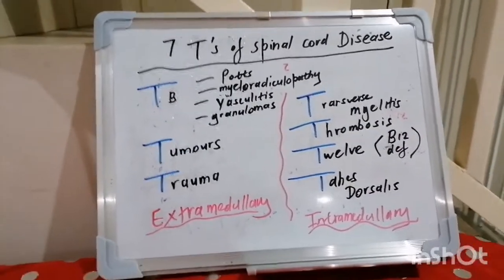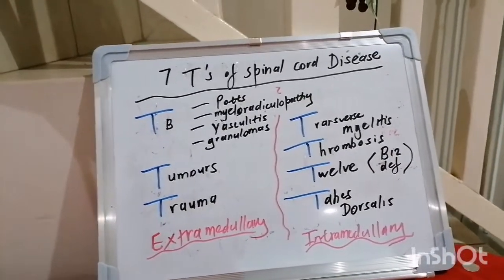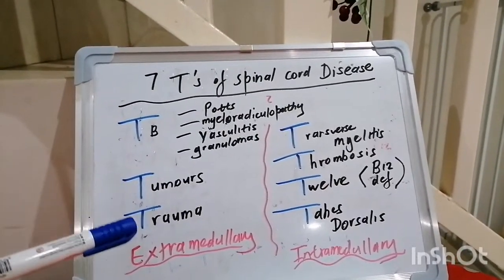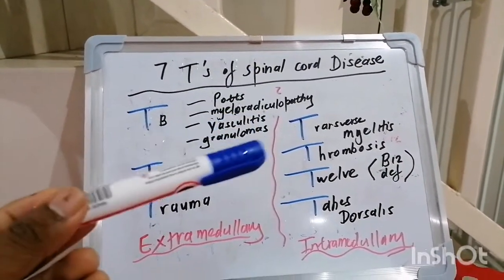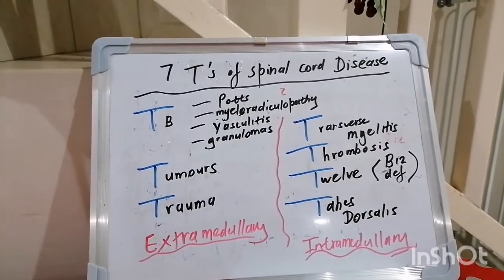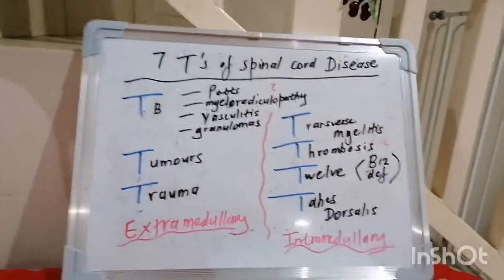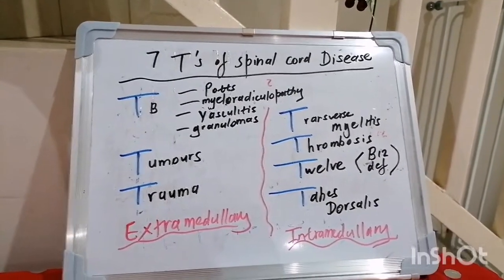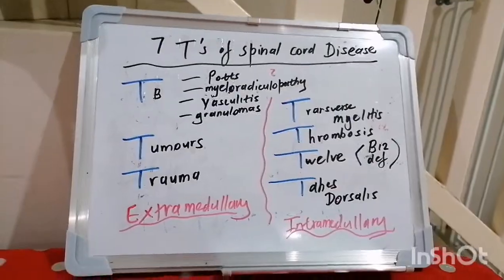So there you go — the seven T's of spinal cord disease. Extramedullary causes including TB, tumors, and trauma. Intramedullary being transverse myelitis, thrombosis, B12 deficiency, and Tabes Dorsalis. God bless you and have a wonderful day. We're going to start with mnemonics in cardiology from tomorrow. See you then. Take care.